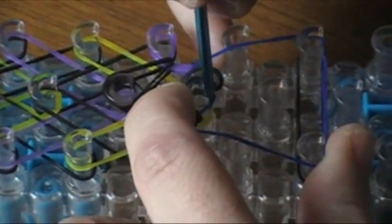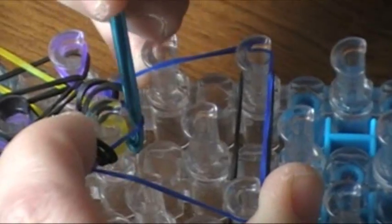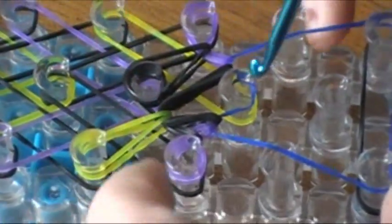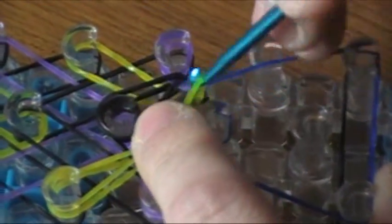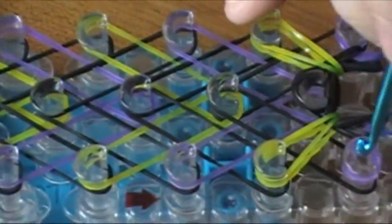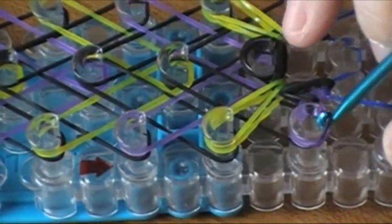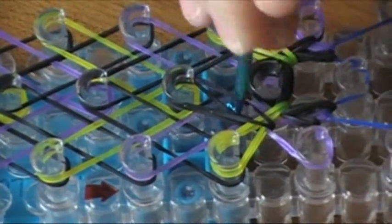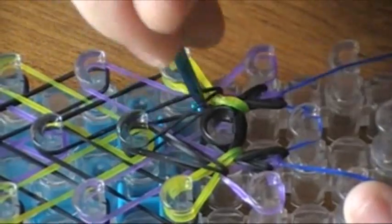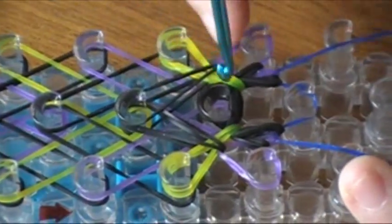We're going to fold that black band over, go underneath the blue cap band, grab the yellow, go to the left, and then to the right. So we're always going to start with the black and then go in the center and get the colored bands.